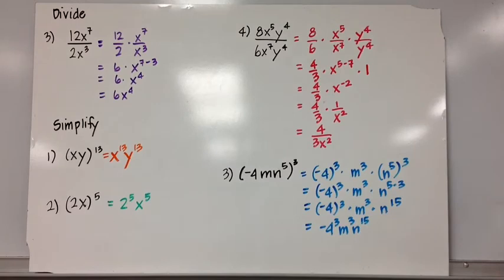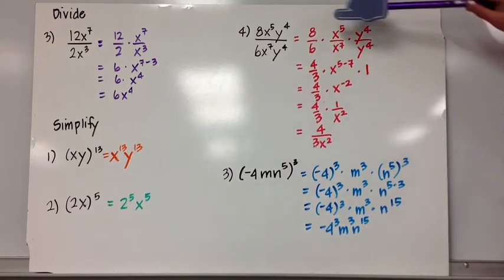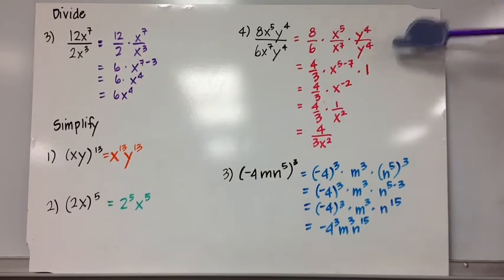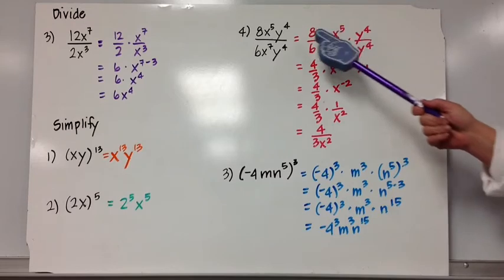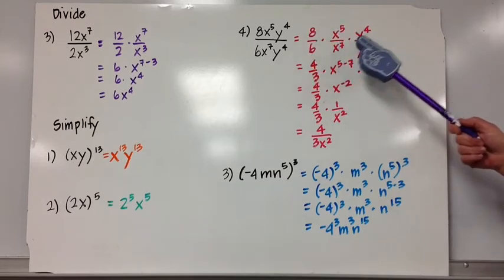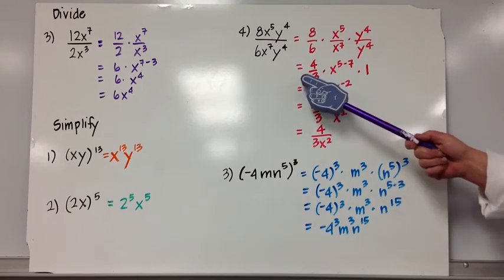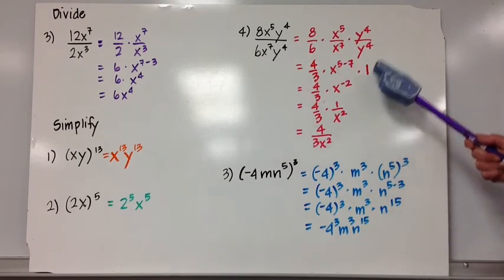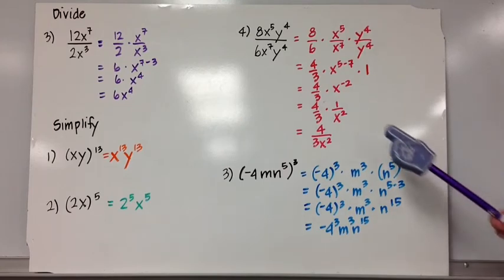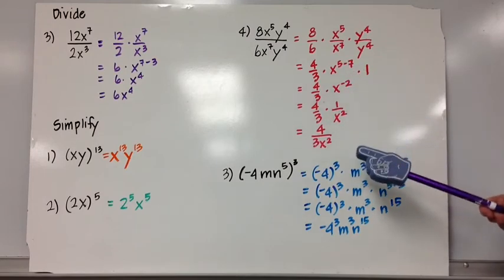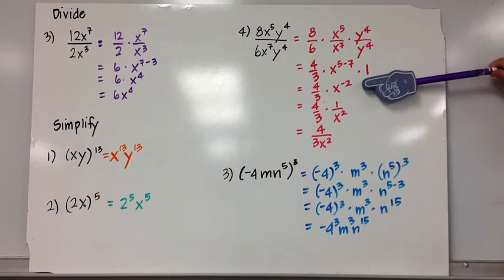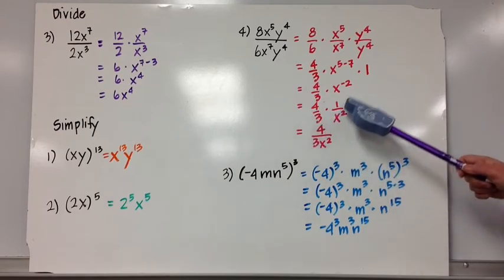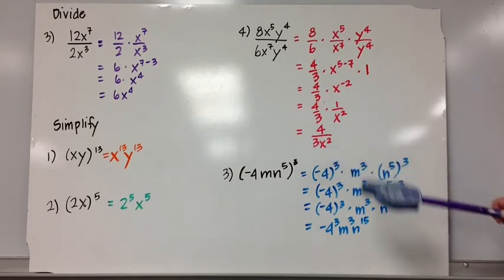8x to the 5th y to the 4th divided by 6x to the 7th y to the 4th. I'm going to split up those fractions: 8 over 6, x to the 5th over x to the 7th, and y to the 4th over y to the 4th — constants and same bases. 8 divided by 6 simplifies to 4 thirds. x to the 5 minus 7 is x to the negative 2, and y to the 4th over y to the 4th is 1. So that's 4 thirds times x to the negative 2. Since I don't want a negative exponent, x to the negative 2 is 1 over x squared, giving a final answer of 4 over 3x squared. Totally simplified.